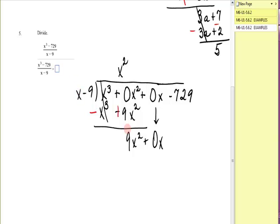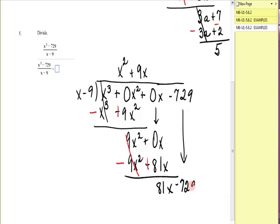What do I have to multiply x by to get 9x squared? The answer is 9x. 9x times x is 9x squared. 9x times negative 9 is negative 81x. Change, change, once again a good thing where I have lineup of like terms. That gives me 81x, bring down, minus 729.